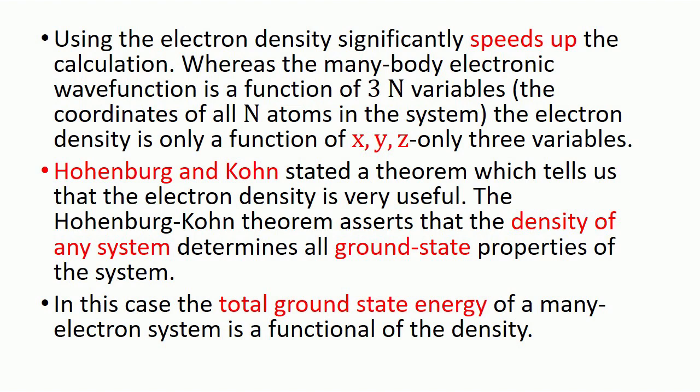Hohenberg and Kohn stated a theorem which tells us that the electron density is very useful. The Hohenberg-Kohn theorem asserts that the density of any system determines all the ground state properties of the system — the electron density of a system contains all its ground state properties.